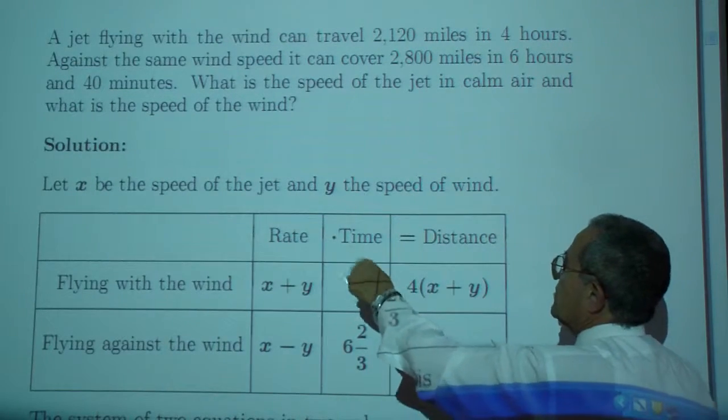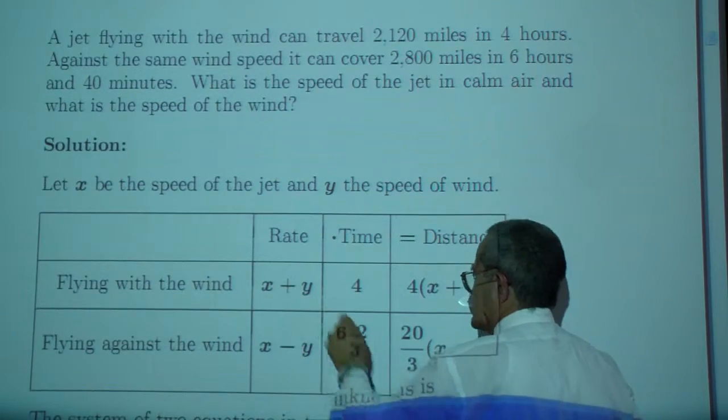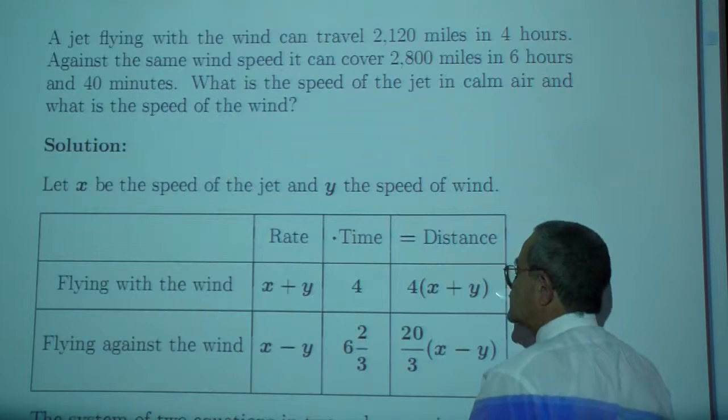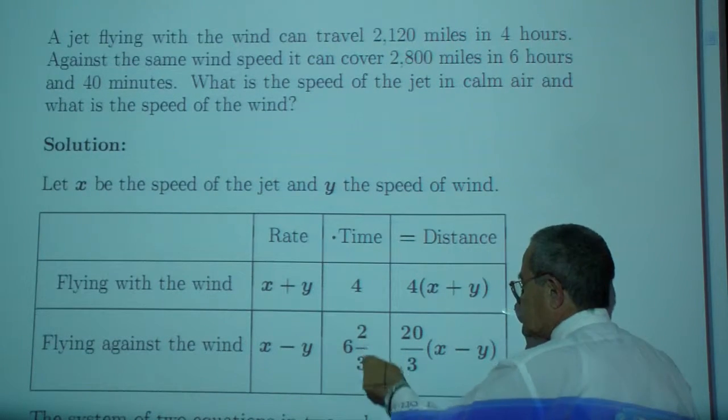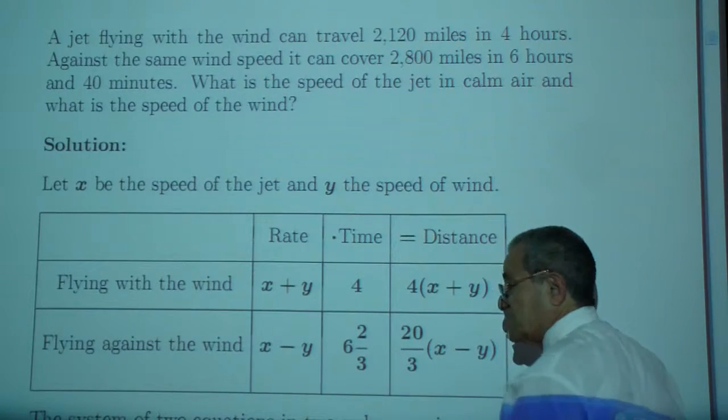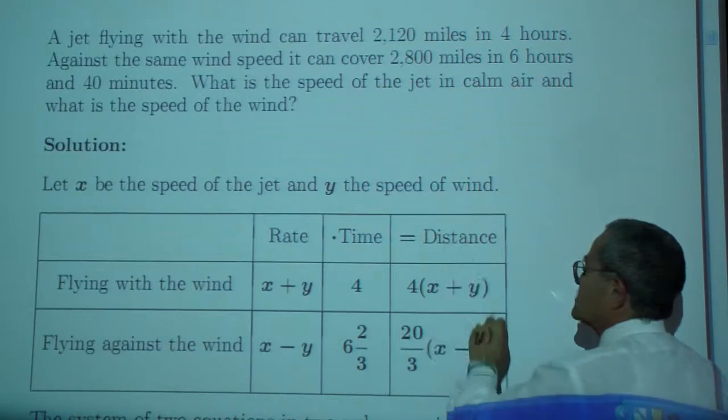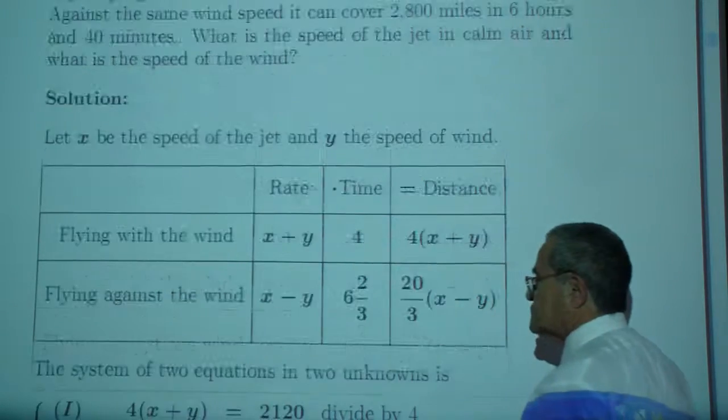Let x be the speed of the jet and let y be the speed of the wind. Flying with the wind you get x plus y. Against the wind, x minus y. 40 minutes is two-thirds of an hour. As I said, be careful. Six and two-thirds of an hour. And multiply the two. You get distance. Distance is rate times time.